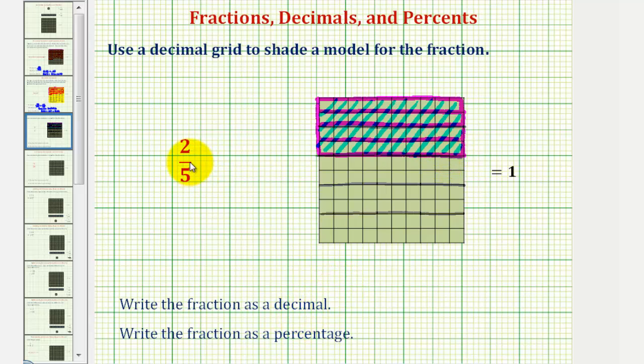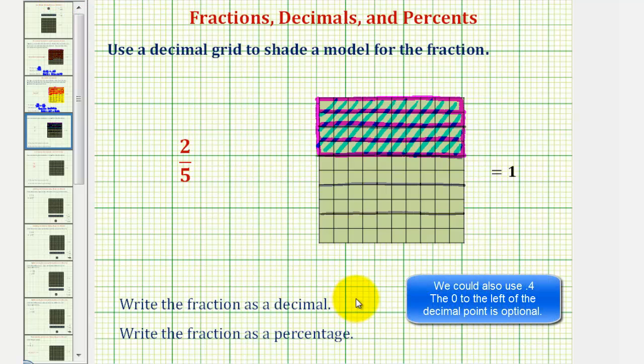So as a decimal, two-fifths is equal to four-tenths, which would be zero point four.